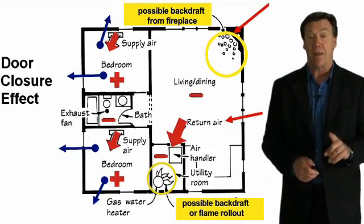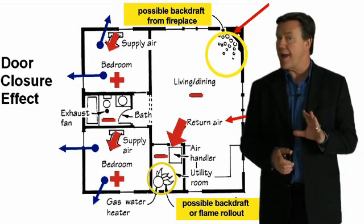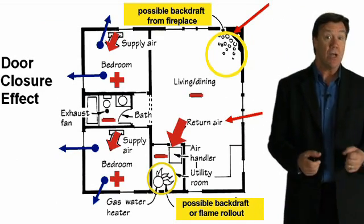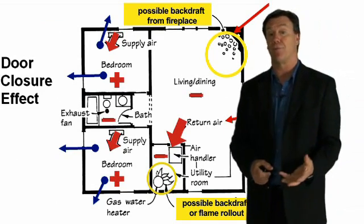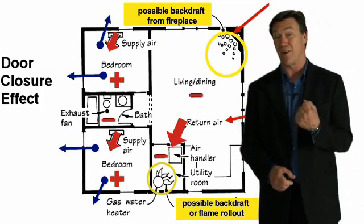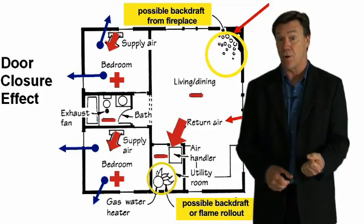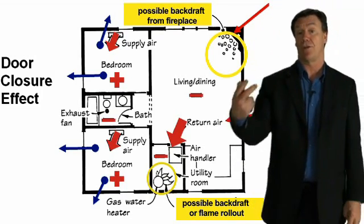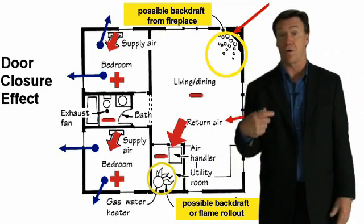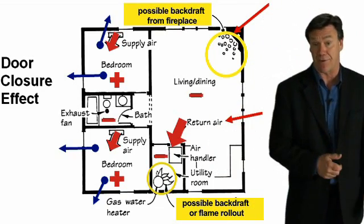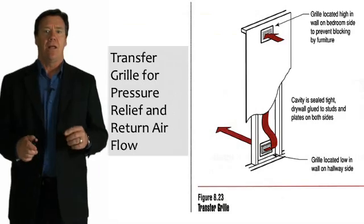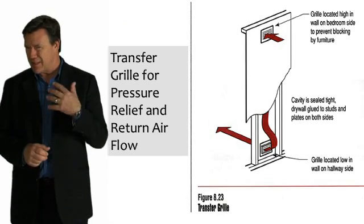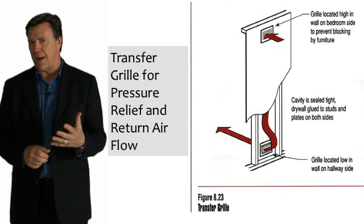However, many homes today do not have return air ducts in each room — they might have one central return. So if we have a bedroom door closed, that could cause that room to be under a positive pressure, which might cause an adjacent room to be under negative pressure, which could cause a fireplace to backdraft. When bedroom doors are closed, they can, as mentioned, be under a positive pressure.